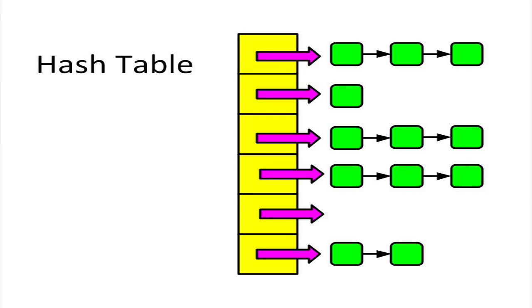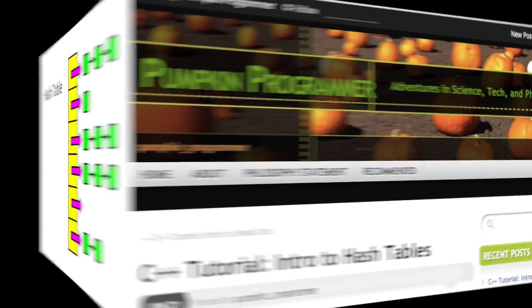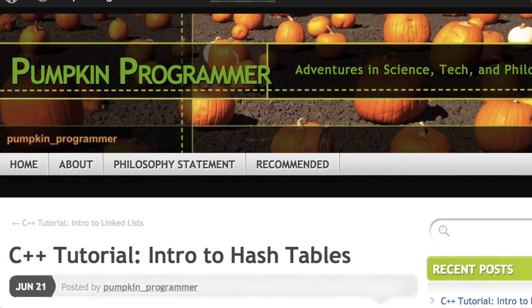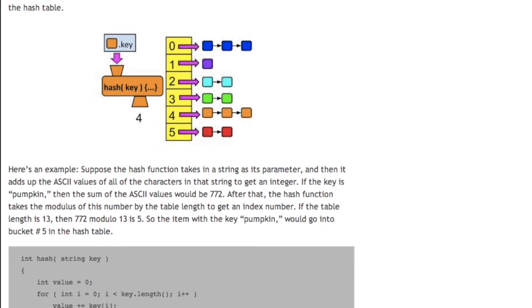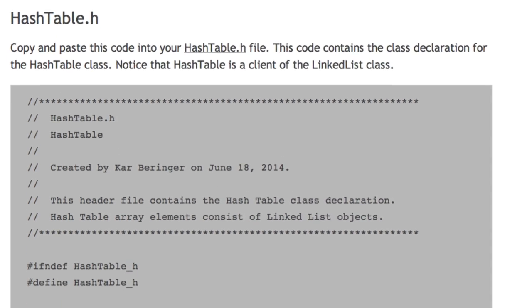In this tutorial, we will be taking an introductory look at hash tables in C++. Hash tables are useful for storing large amounts of data in an efficient manner. In the link in the video description, you can find everything you need to create a C++ program. Simply copy and paste the code into your own project.